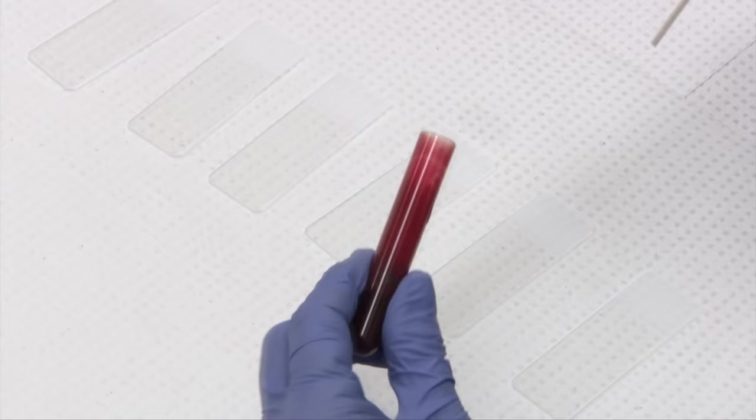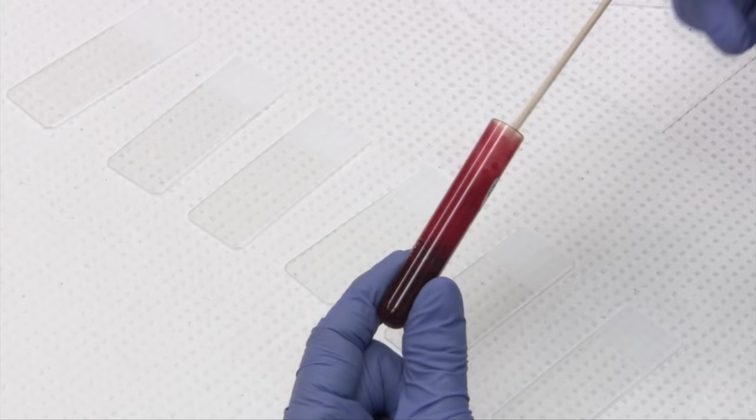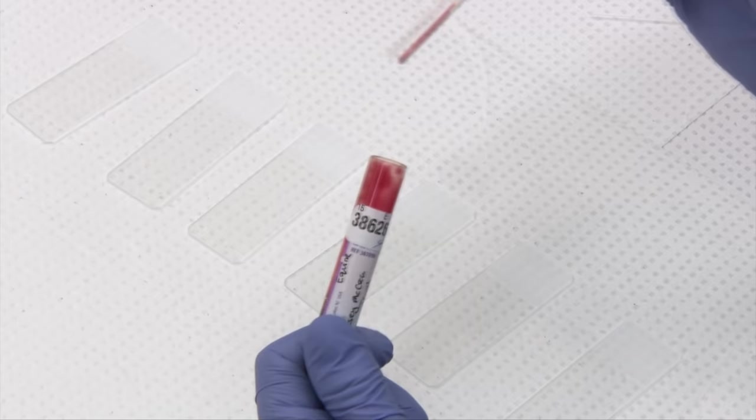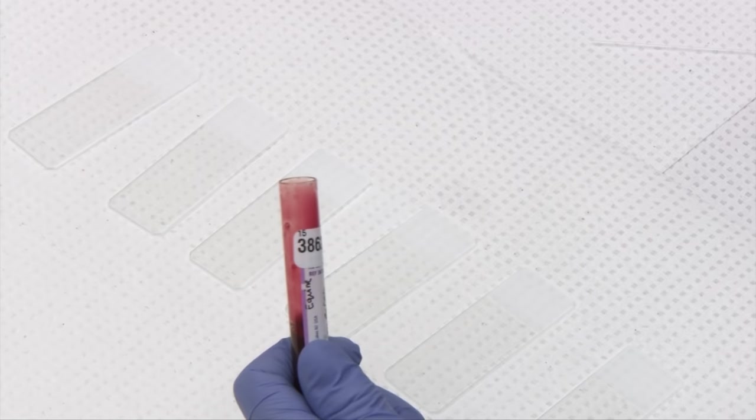If you're concerned there may be clot in the sample, which is obviously going to affect your numerical parameters, most notably your platelets, you can take an applicator stick and just run it through your sample. If there are any clots in there it will adhere to your applicator stick. So if you don't have that, you know you have a good sample.